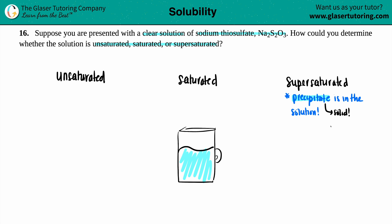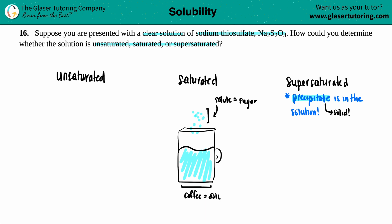Anytime you are in a supersaturated solution, it means you have way too much solute in your solvent, and the whole thing is the supersaturated solution. The sugar we added is the solute — the solute is always the one that goes into the liquid. The coffee is the solvent. The combination of solute and solvent makes up the entire solution, which is classified as unsaturated, saturated, or supersaturated.